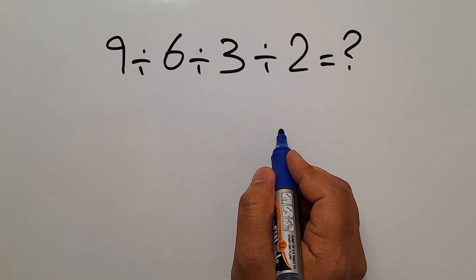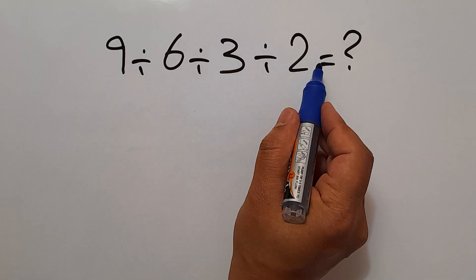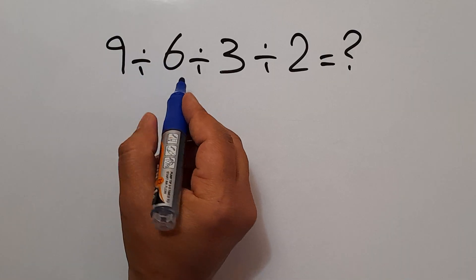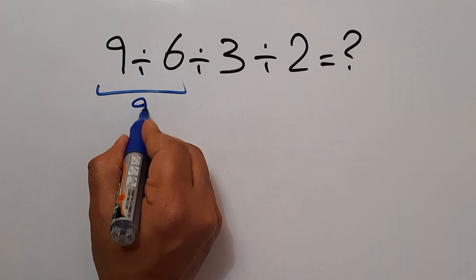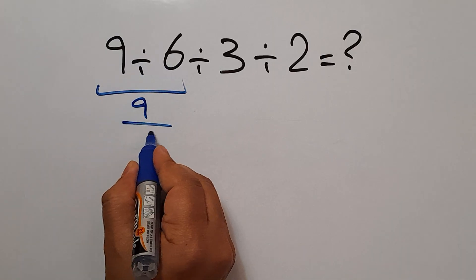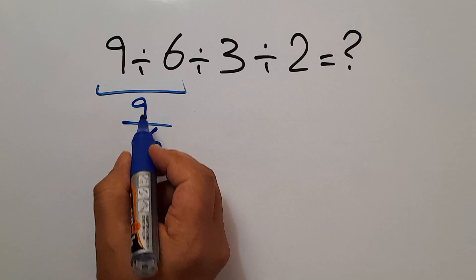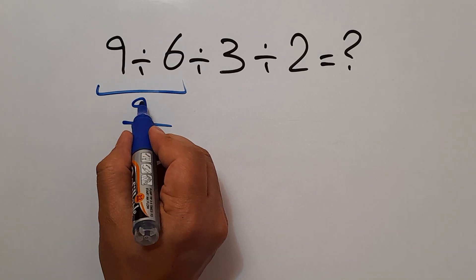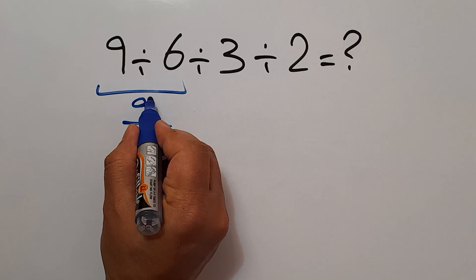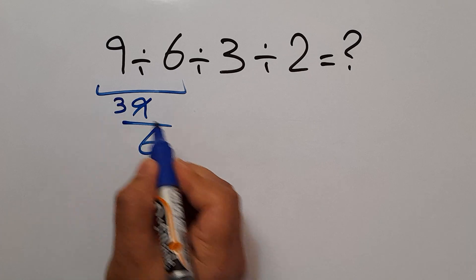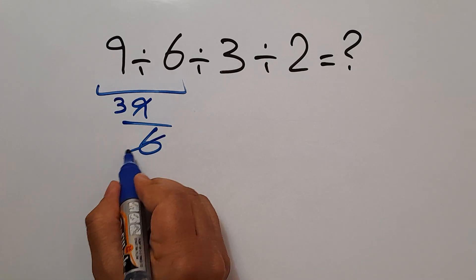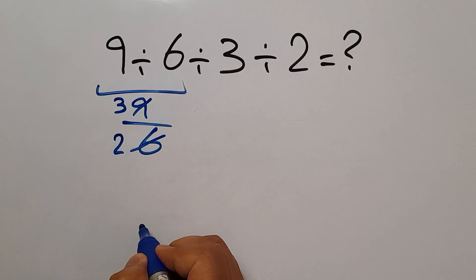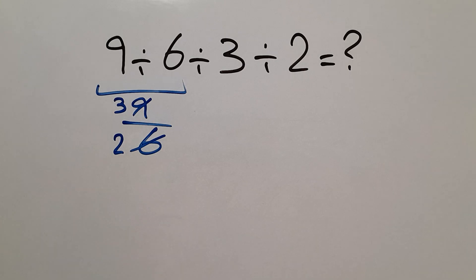Here we work from left to right. 9 divided by 6 gives us 9 over 6, and we can simplify this fraction. 9 divided by 3 equals 3, and 6 divided by 3 equals 2, so finally we have 3 divided by 2.